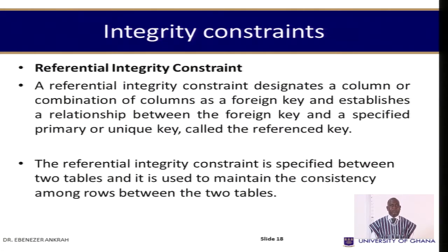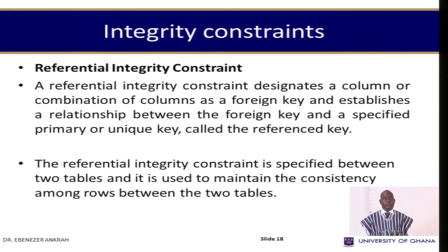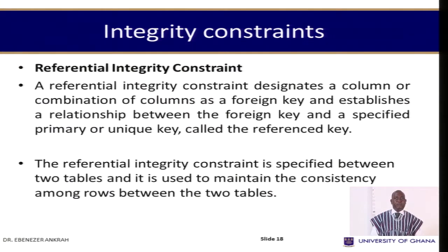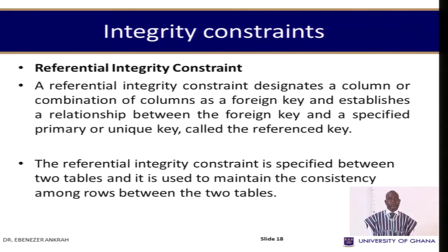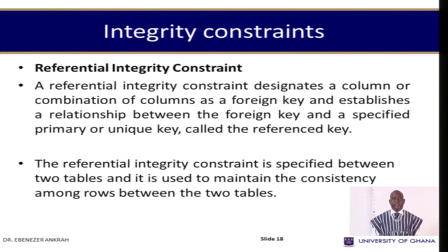The referential integrity constraint deals with the combination of the foreign key and the primary key — there must be agreement between the two. A referential integrity constraint designates a column or combination of columns as a foreign key and establishes a relationship between the foreign key and the specified primary key or unique key, so that the foreign key can be accessed as needed.